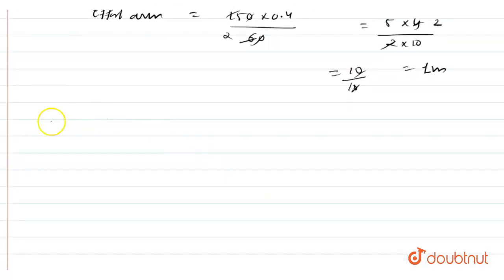So the length of the machine will be 1 meter plus 0.4 meter, it comes out to be 1.4 meter. So this is our final answer. Hope this answered your question.